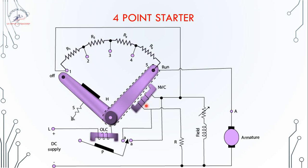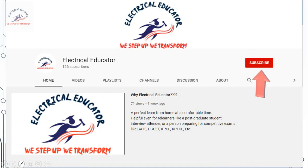The naming convention: a three-point starter has three connection points — Line, Field, and Armature. A four-point starter adds a separate NVC connection, giving four points: Line, NVC, Field, and Armature. All other features — the resistor banks, OLC, NVC working — are identical. These starters do not help in speed control; they only limit the starting current to protect the armature windings from burning out. That's all for today — please subscribe and hit the bell icon for instant notifications when new videos are released.